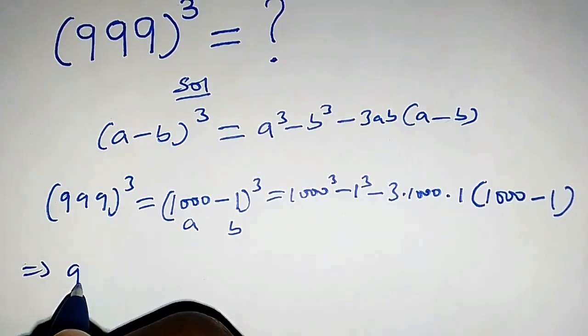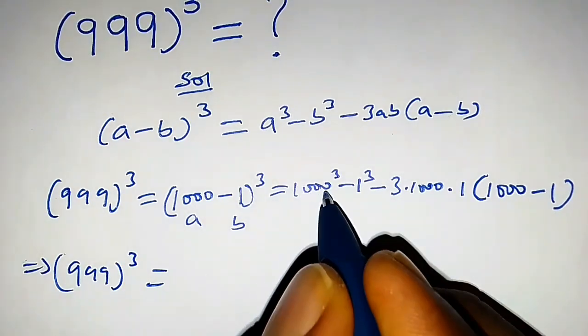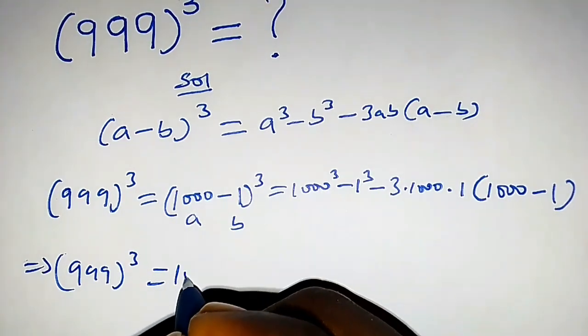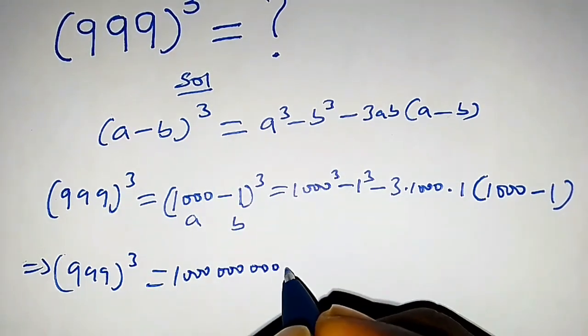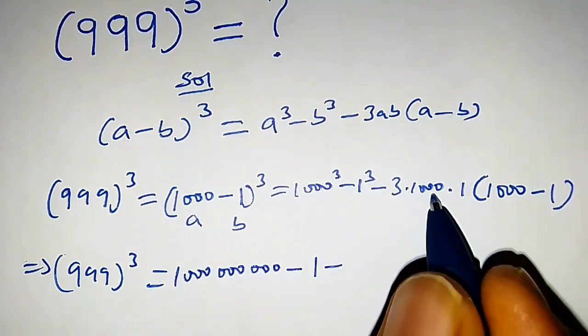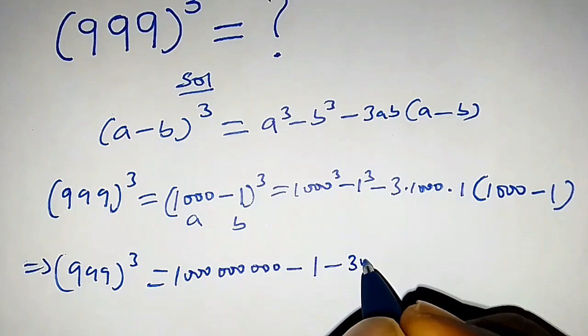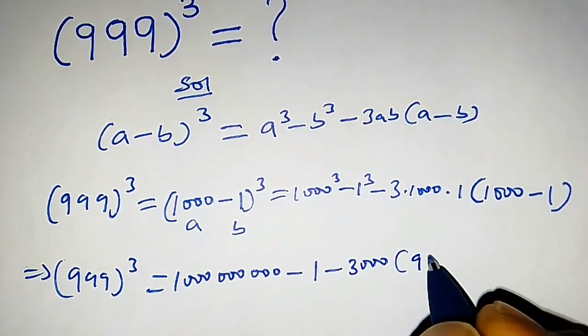This implies 999 raised to the power 3 is equal to 1000 raised to the power 3, that is 1 billion, minus 1 is 1, minus 3 times 1000 times 1, that is 3000, into 1000 minus 1, that is 999.